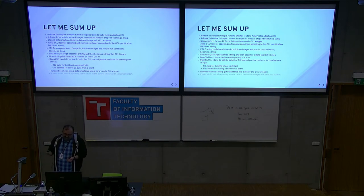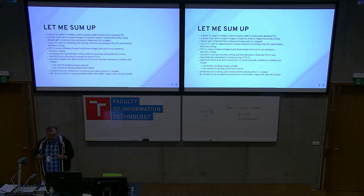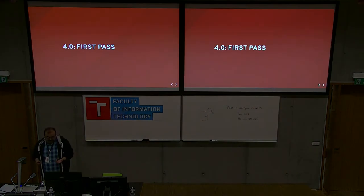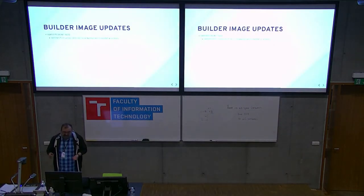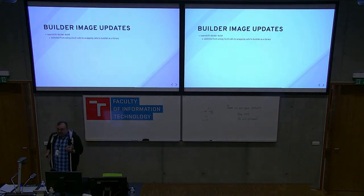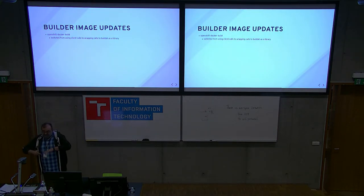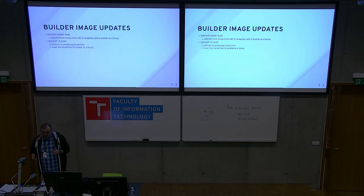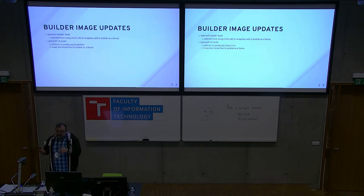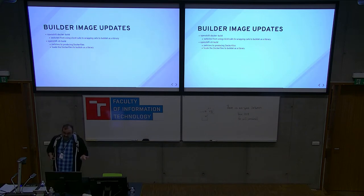So Buildah became a thing. And then we realized we have all these libraries that we can put together to change fundamentally how we do builds in OpenShift. So for 4.0, first pass: OpenShift Docker Build now uses Buildah internally inside of the build container where it's invoked to do the build. OpenShift STI Build uses the functionality that source-to-image has to produce a Dockerfile, which we then feed into the exact same logic for building the container image in the container.